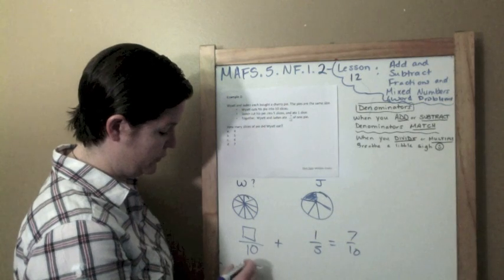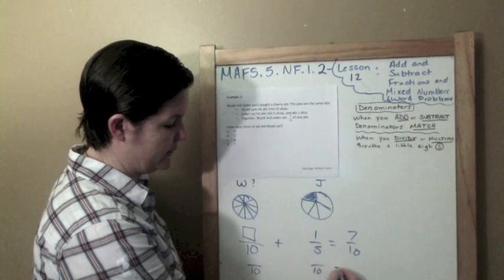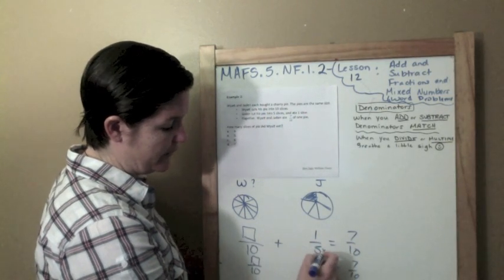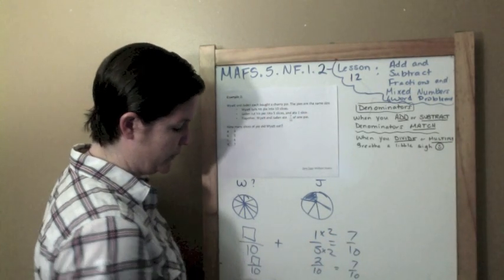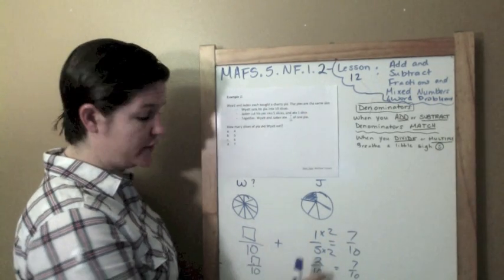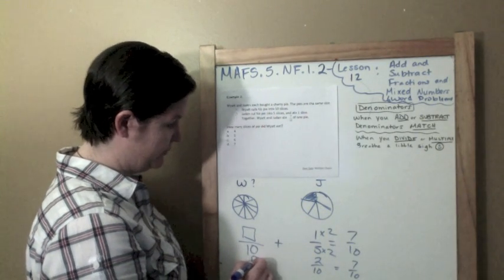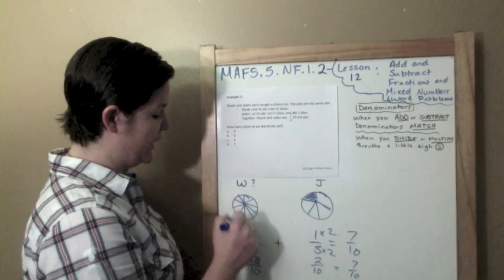We know that he has 10 slices. We don't know how many he ate. We know that Jayden ate 1/5. And then together they ate 7/10. This looks a little similar to our last episode where we had a missing numerator. I want to add these fractions, but my denominators aren't the same. So, I need to rewrite this so that my denominators are the same. I know that the common denominator would be 10 equals 7/10. 5 times 2 got me my 10, so 1 times 2 will give me 2. So, what plus 2 will give me 7? You're right. 5. 5/10. So, that means Wyatt ate 5 slices.